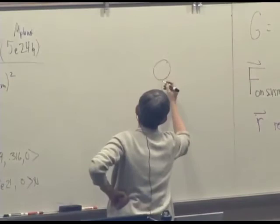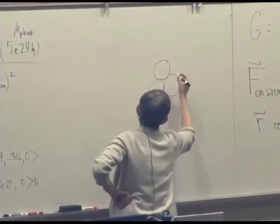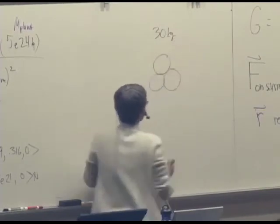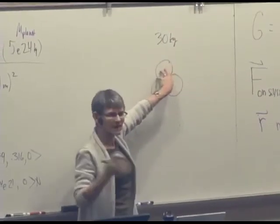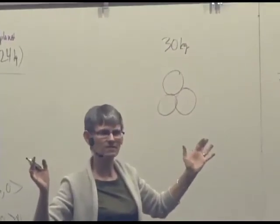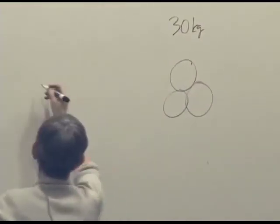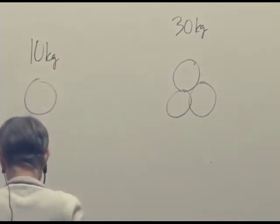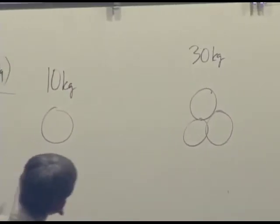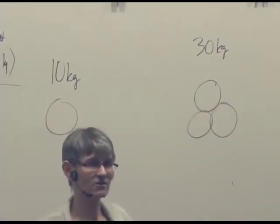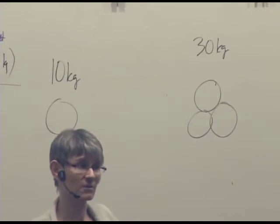So here's the object whose mass is 30 kilograms. And we're going to represent it as three 10 kilograms. We're going to divide it into three 10 kilogram pieces. And then here's our 10 kilogram object over here. And this equation says that the force the big guy exerts on the little guy should be equal in magnitude to the force the little guy exerts on the big guy.